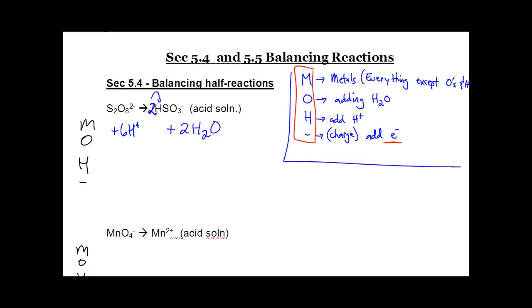Now, I've got to count up the total charge. So, the total charge on the left-hand side is minus two and six pluses, for a total of plus four is my total charge on the left-hand side. And on the right, my total charge is two times minus one, which is minus two.